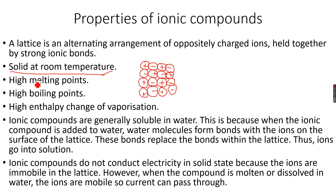The strong ionic bonds also give ionic compounds high melting points and high boiling points, because you need a lot of energy to break apart the ionic compound. For the same reason, they have high enthalpies of vaporization — meaning the amount of energy needed to vaporize one mole of the ionic compound is very high.